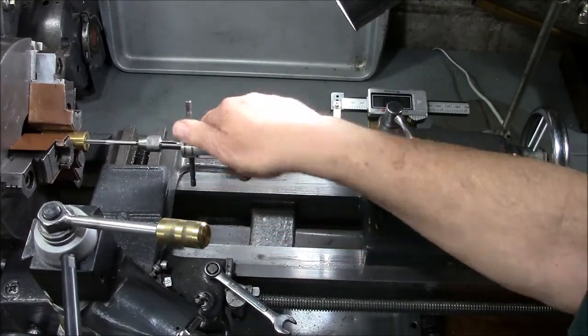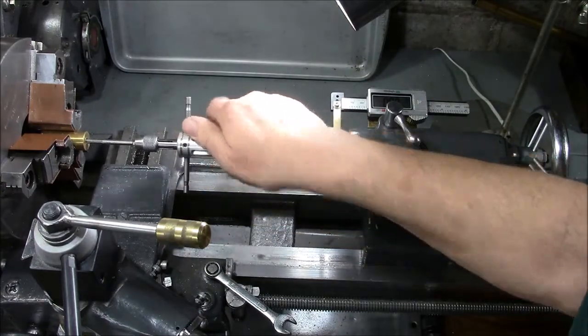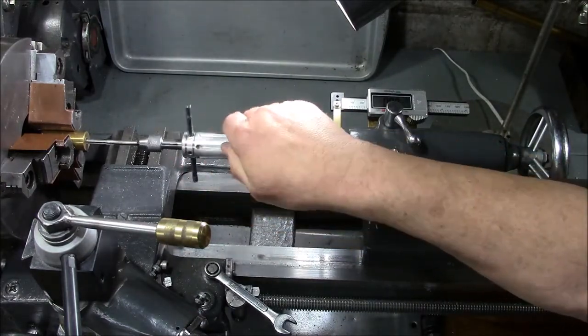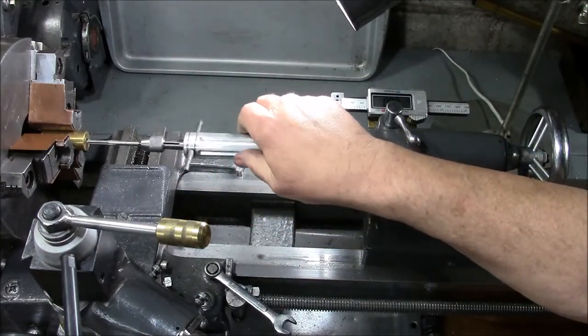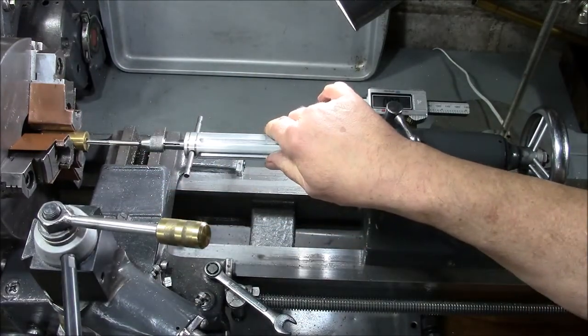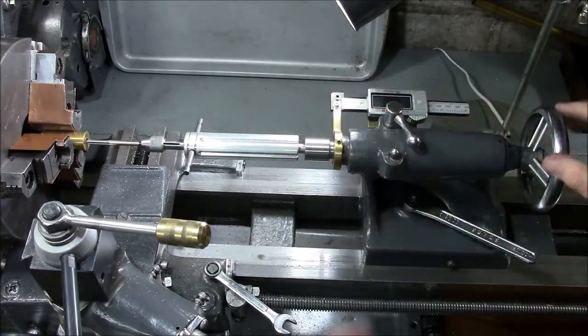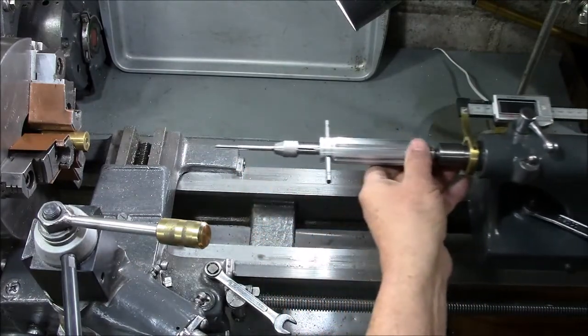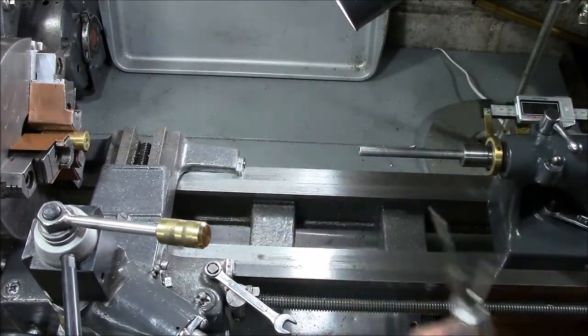If it gets a little more difficult, you can grab the T-handle. Go in as far as you need, backing off to clear the chips. Have the appropriate cutting oil on there if you need it. When you're done, back it out, take it off, and there's your tapped hole.